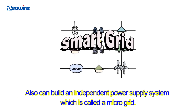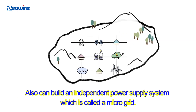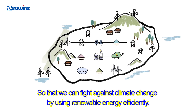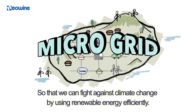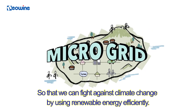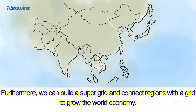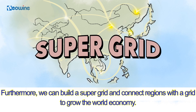We can also build an independent power supply system, which is called a microgrid, so that we can fight against climate change by using renewable energy efficiently. Furthermore, we can build a super grid and connect regions with a grid to grow the world economy.